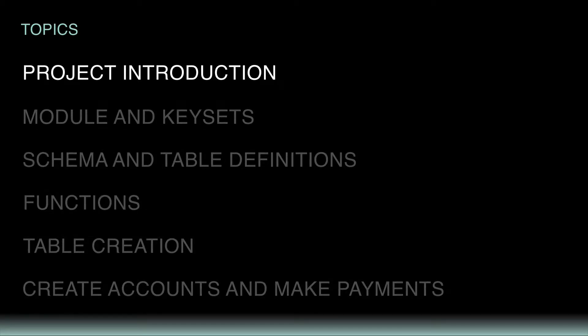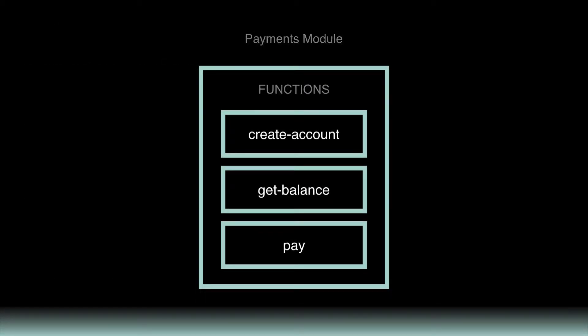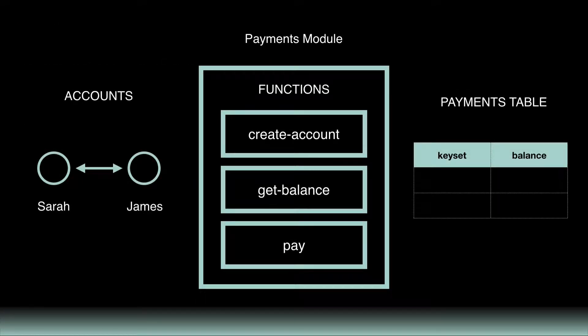Let's get started with the project overview. Take a look at this image — it provides a summary of each of the features you'll create for the Simple Payments smart contract. As you can see, you'll create a payments module including three functions: Create Account, Get Balance, and Pay.